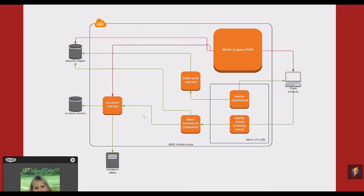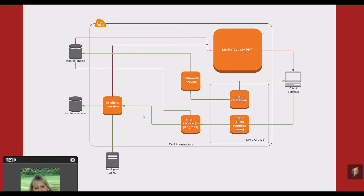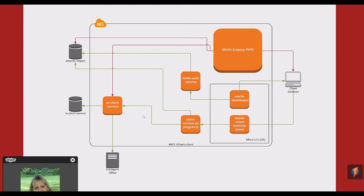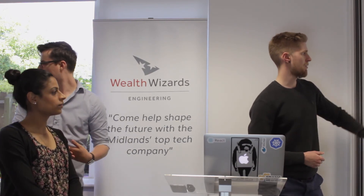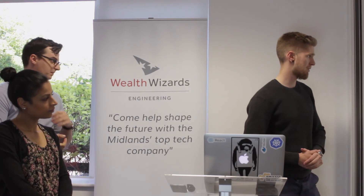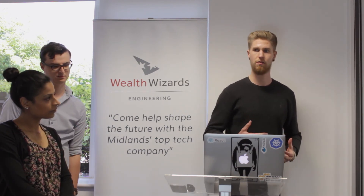Over on the top right you can see we've got client services and Merlin, which is our legacy PHP code base. Traditionally it was all session-based authentication, which meant any new work on Merlin had to be within that Merlin code base. By taking this token-based approach, you can see it enables all these new microservices around here — Merlin dashboard, which is our new login; Merlin client, coming soon; client service in progress; authentication service; multiple databases we're talking to; external clients — all just authenticating the user by passing around a token. Hopefully that gives you a bit more understanding of why this is really useful for us.